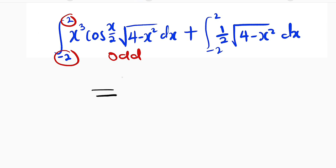So this is equal to, already this is zero, all we have left is this and we can factor 1 over 2 outside. So we have 1 over 2 the integral from negative 2 to 2 of the square root of 4 minus x squared dx.